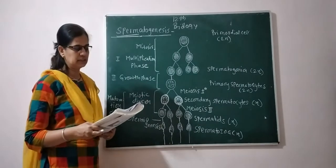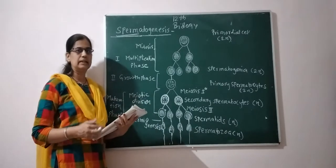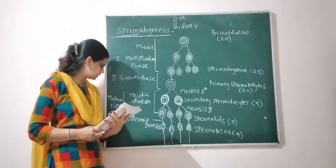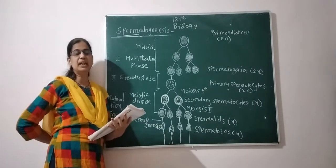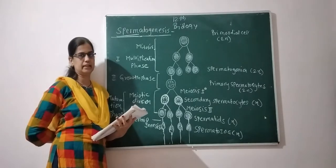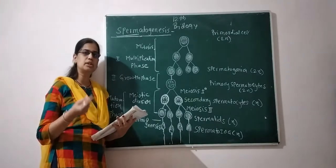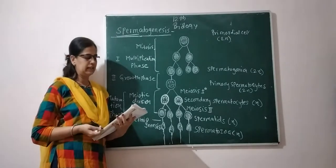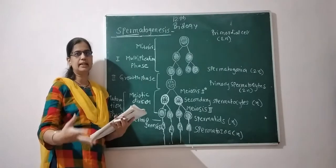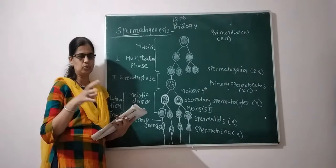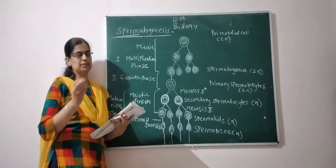In the puberty stage, when we have the hypothalamus, we have various types of secretions. We have gonadotropin-releasing hormones. GnRH increases the secretion of the follicle-stimulating hormone, FSH. GnRH and FSH mostly induce the process of spermatogenesis — we have these two hormones.